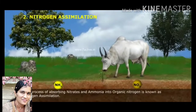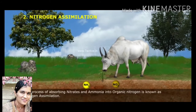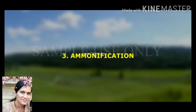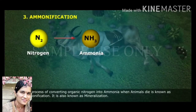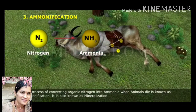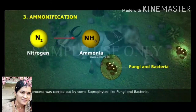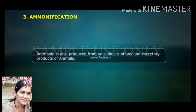Nitrogen assimilation: the process of absorbing nitrates and ammonia into organic nitrogen is known as nitrogen assimilation. Organic nitrogen is transferred into animals' bodies when plants are eaten by animals. Ammonification: the process of converting organic nitrogen into ammonia when animals die is known as ammonification, also called mineralization. This process is carried out by saprophytes like fungi and bacteria which feed on dead and decaying matter. Ammonia is also produced from volcanic eruptions and excretory products of animals.